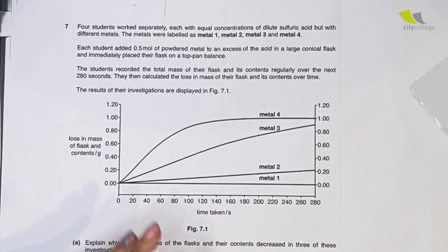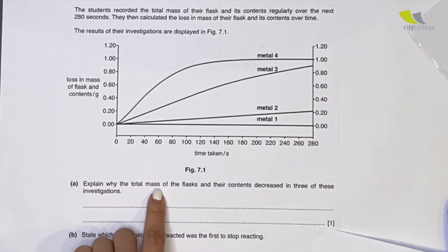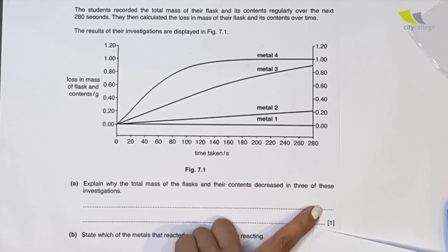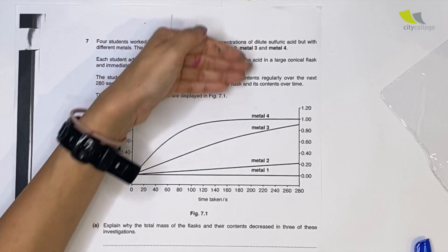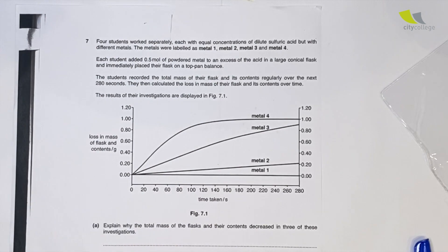They say why does the total mass of the flask and content decrease in these three? I just explained - because acid plus metal gives you hydrogen gas. Hydrogen gas evolved.